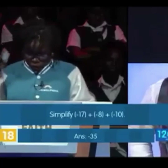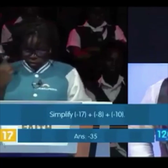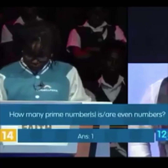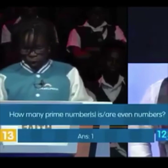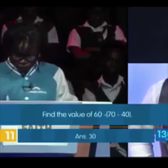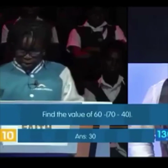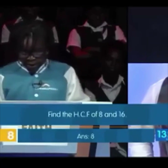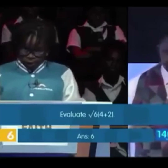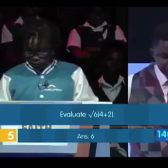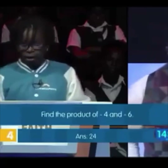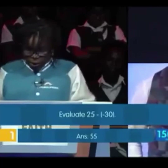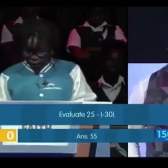Simplify minus seventeen plus minus eight plus minus ten: minus thirty five. Correct. How many prime numbers? One. Correct. Find the value of sixty minus seventy minus fourteen. Correct. Find the HCF of eight. Correct. Evaluate the square root of six bracket six to. Correct. Find the product of minus four and minus twenty four. Correct. Evaluate the value of twenty five minus minus thirty: fifty five. Correct.